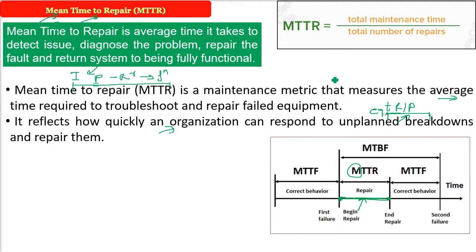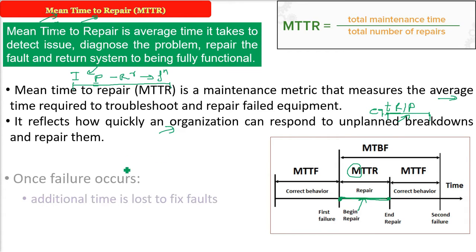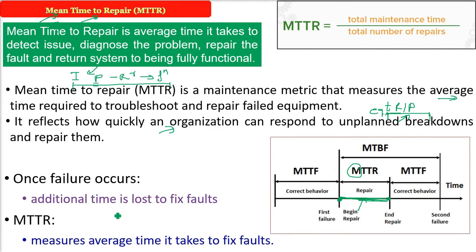For example, if there is an electricity problem in your house, it could be from your pole, from your transformer, or from the hydroelectric source. The time to repair will be different depending on the kind of problem. Once a failure occurs, there will be additional time to fix the fault. MTTR finds out the average time it takes to fix those faults.